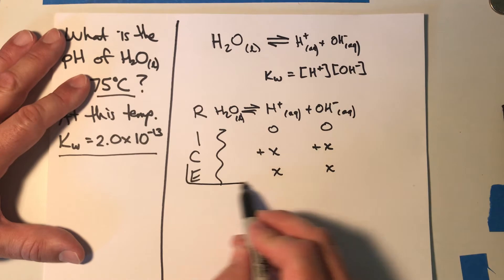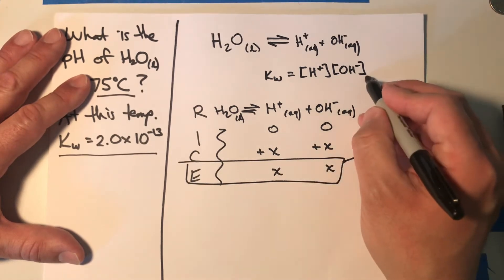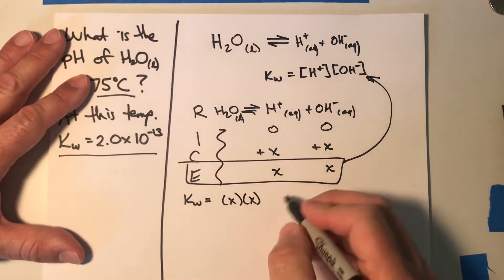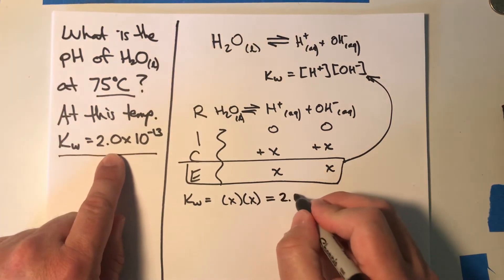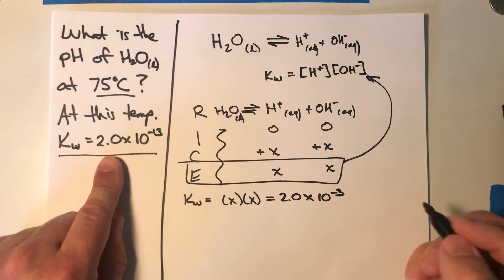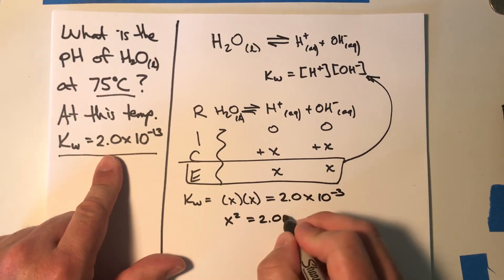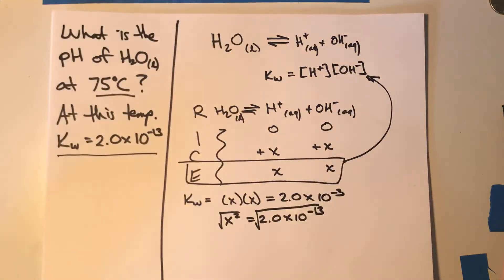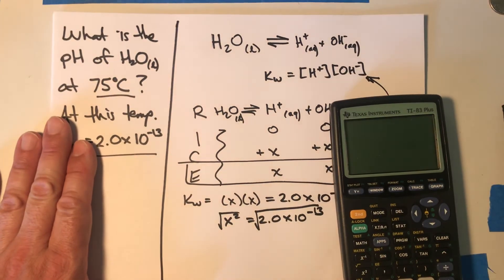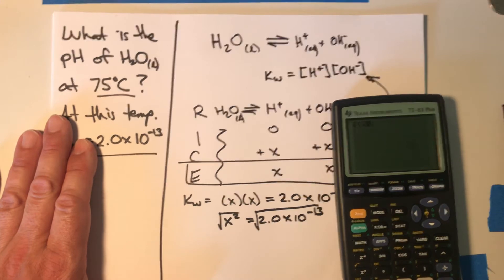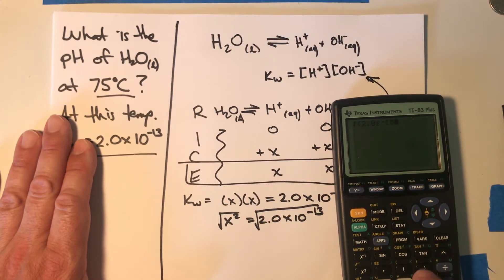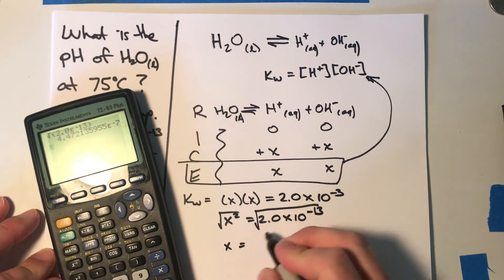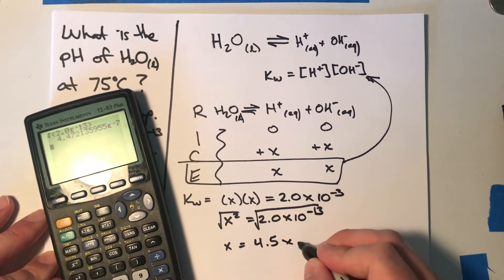Now we're going to plug our equilibrium row into our equilibrium expression. Kw is equal to x times x, and at this temperature that equals 2.0 × 10⁻¹³. Simplifying, x² = 2.0 × 10⁻¹³, and taking the square root of both sides — using our calculator, square root of 2.0e-13 — gives us x = 4.5 × 10⁻⁷.